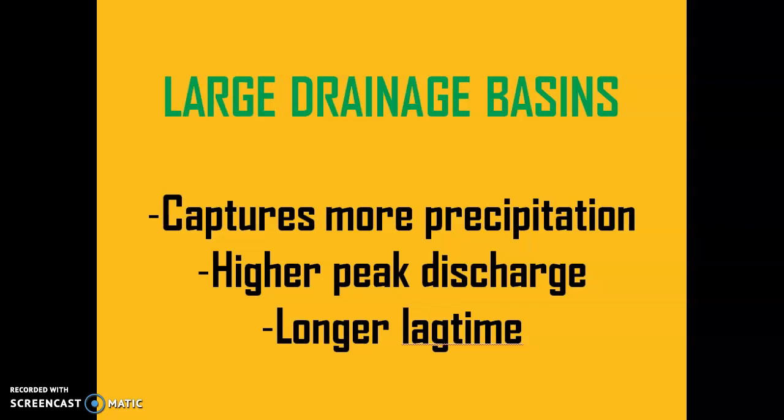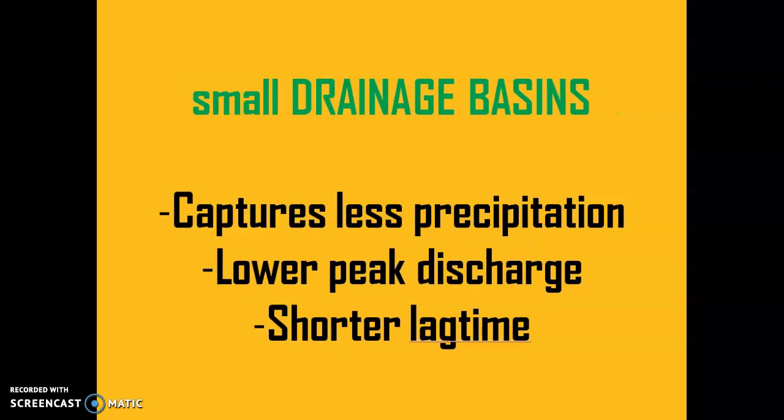The opposite applies to a small drainage basin. A small drainage basin means you will capture less precipitation due to the smaller surface area. In doing so, you will have a lower peak discharge because you will have a lower volume of water traversing across the landmass. However, given the small surface area, the streams or channels of water would react very quickly to the volume of water coming in, meaning there will in fact be a shorter lag time.